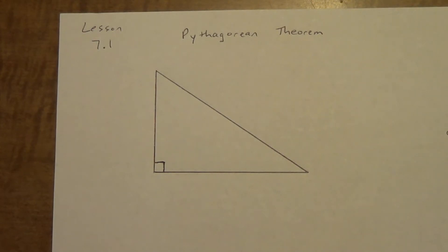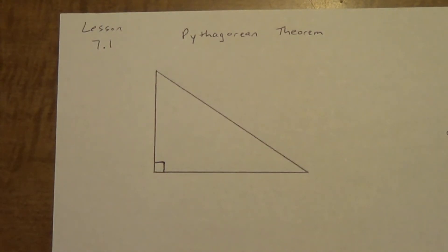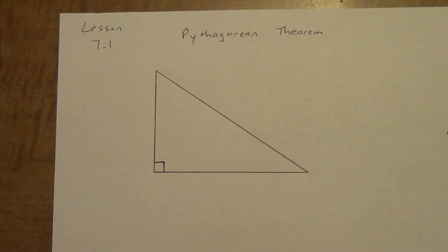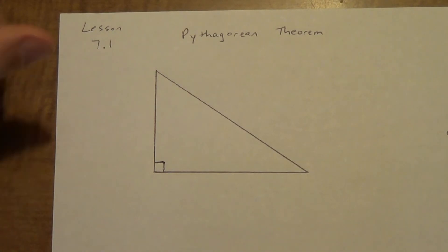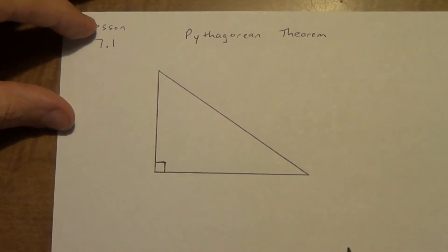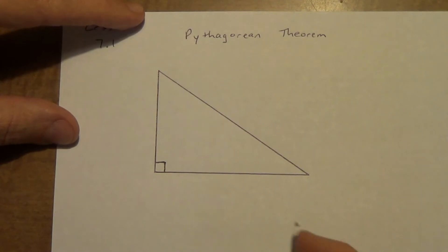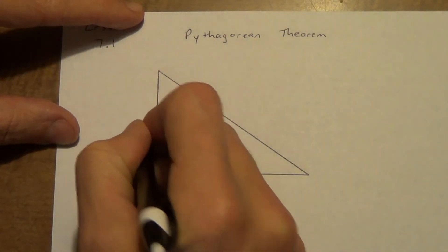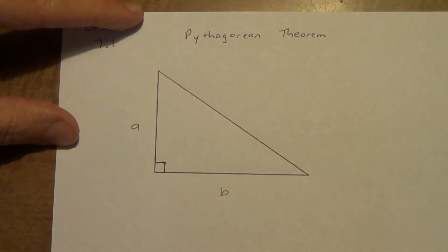That's actually the way it's written: in a right triangle, the sum of the squares of the legs equals the square of the hypotenuse. So, the sum means addition — we square one leg, we square the other leg, we add them, and it equals the hypotenuse squared. That's where A squared plus B squared equals C squared comes from. A and B have to be the legs, and C has to be the hypotenuse.